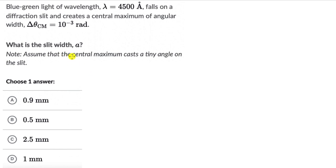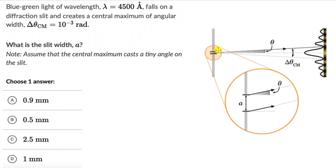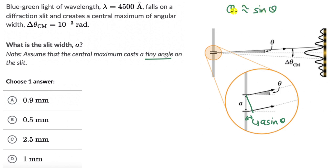We need to figure out the slit width. We know the wavelength and that the central maximum is casting an angle of 10⁻³ radians. Let's start by drawing a single slit, a screen, and how the diffraction pattern looks. The rays going to meet at the first minimum are making an angle theta with the horizontal, giving a path difference of a·sinθ. Since the central maximum casts a tiny angle, we can use the small angle approximation: sinθ ≈ θ.